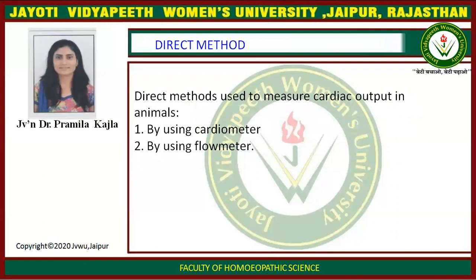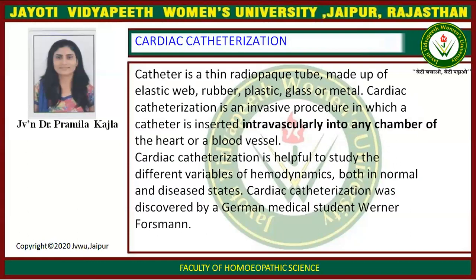Now we can measure cardiac output by direct and indirect methods. The indirect method is used in animals — first by using a cardiometer, second by using a flow meter, and we can also use cardiac catheterization. A catheter is a thin radiopaque tube made of plastic, wire, rubber, or metal. Cardiac catheterization is an invasive procedure in which a catheter is inserted intravascularly into any chamber of the heart or its blood vessels, and is helpful to study different variables of hemodynamics in both normal and disease states. Cardiac catheterization was discovered by a German medical student Werner Forssmann.